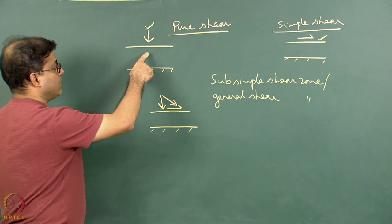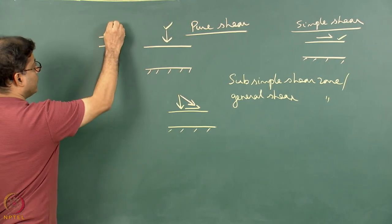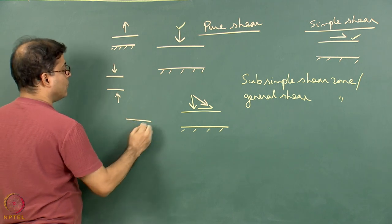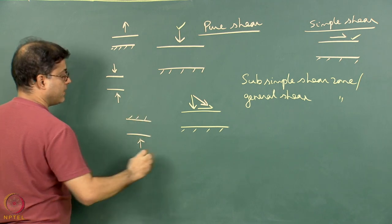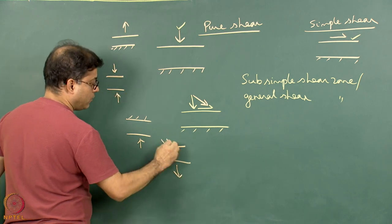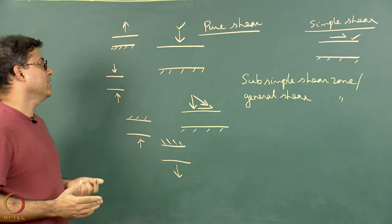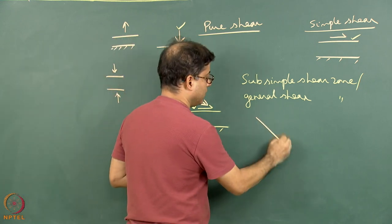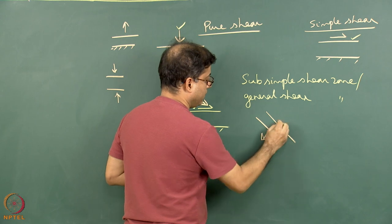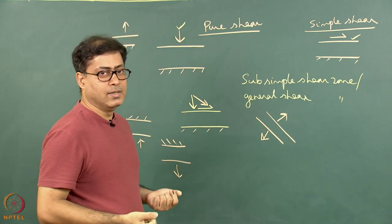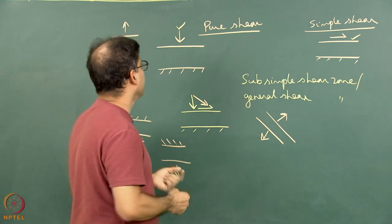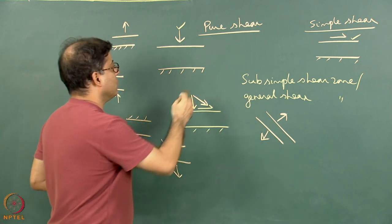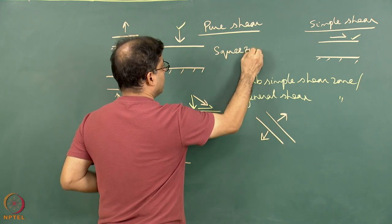Pure shear can involve compression or extension. Both boundaries may be compressed at different velocities, or one boundary is pushed while the other is static. In structural geology textbooks, pure shear zones are shown as always horizontal, but in reality they can also be inclined. A compression in pure shear leads to squeezing of the material — in some mechanics books this is discussed as squeezing flow.